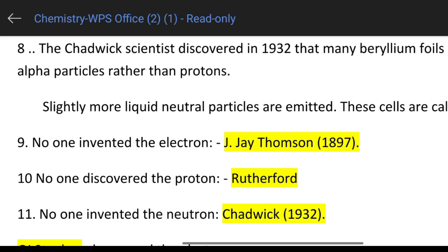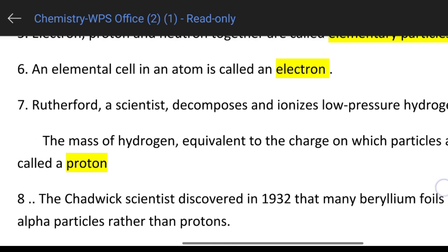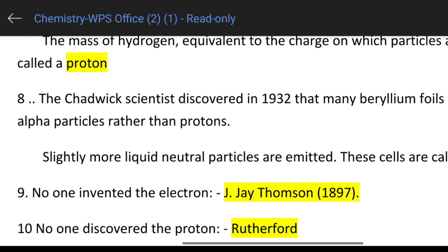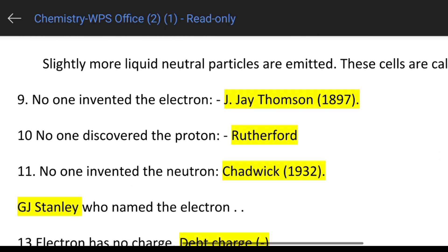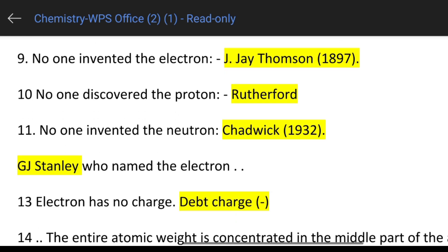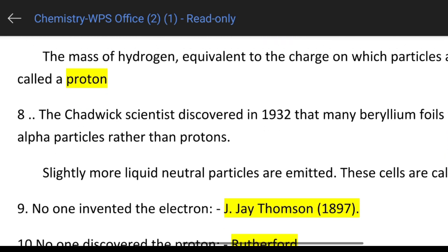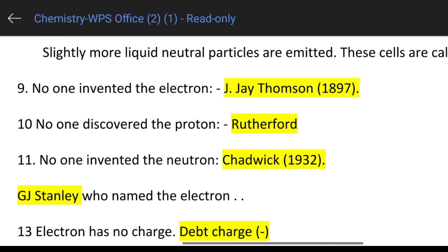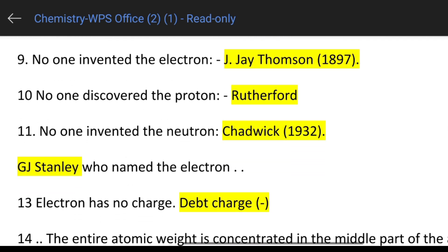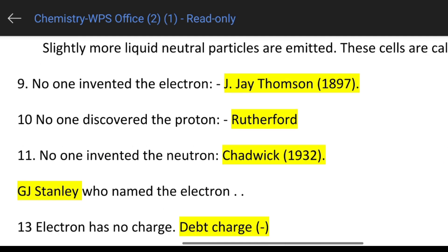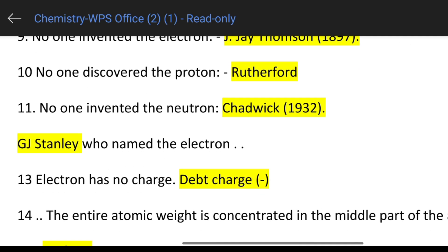The electron was invited — discovered — by J.J. Thomson. The proton, proton — discovered. The neutron — Chadwick. Chadwick 1932 — okay. Neutron, Chadwick.